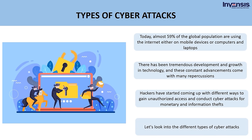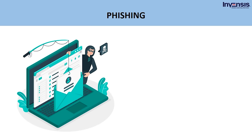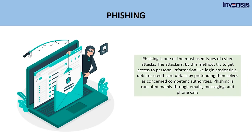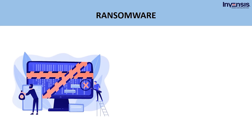The first type of cyber attack is called phishing. Phishing is one of the most used types of cyber attacks. The attackers try to get access to personal information like login credentials, debit or credit card details by pretending to be concerned competent authorities. Phishing is executed mainly through emails, messaging, and phone calls.